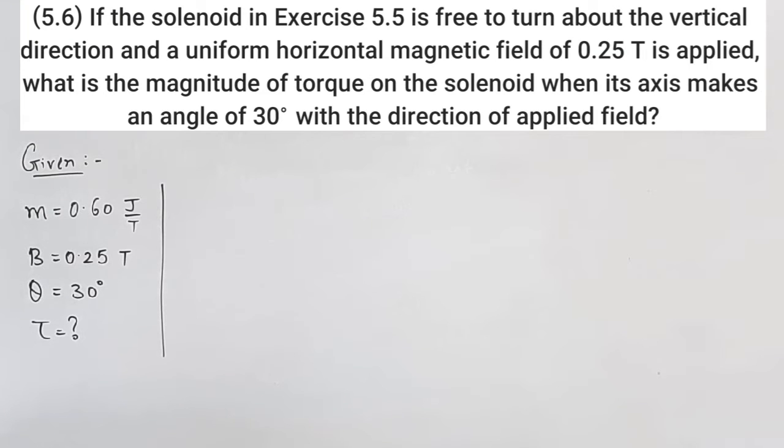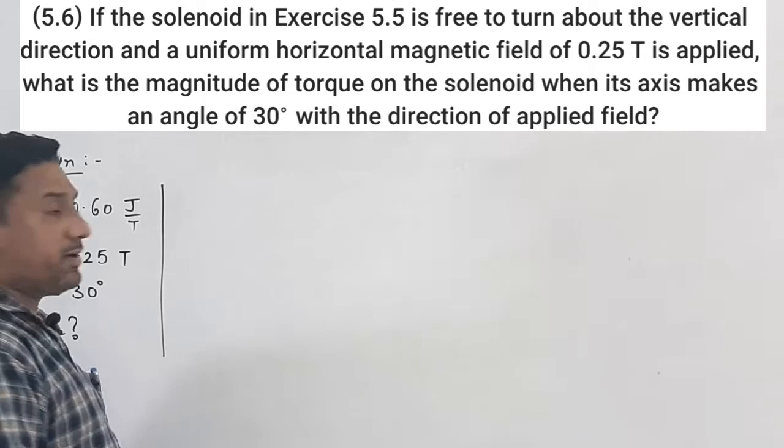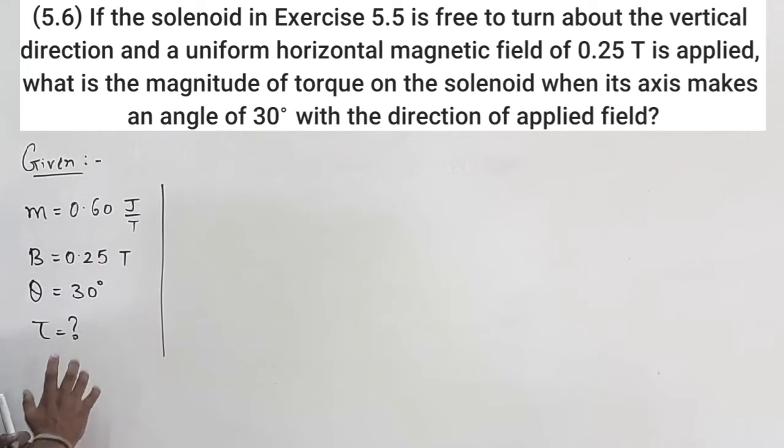Example 5.6: If the solenoid in exercise example 5.5 is free to turn above the vertical direction and a uniform horizontal magnetic field of 0.25 tesla is applied, what is the magnitude of the torque on the solenoid when its axis makes an angle of 30 degree with the direction of magnetic field? Look at this example, in the 5.5 we have found the magnetic moment.